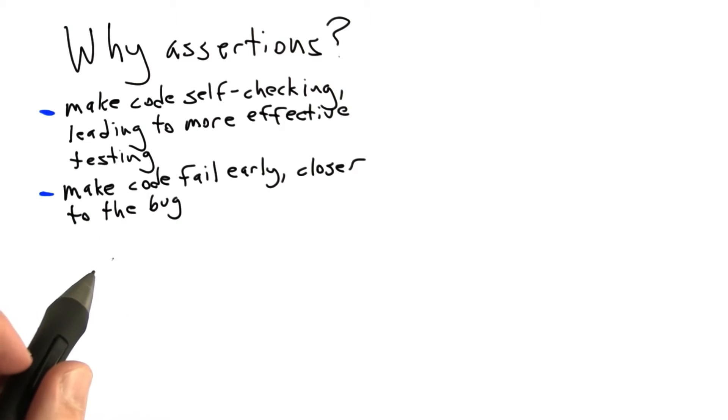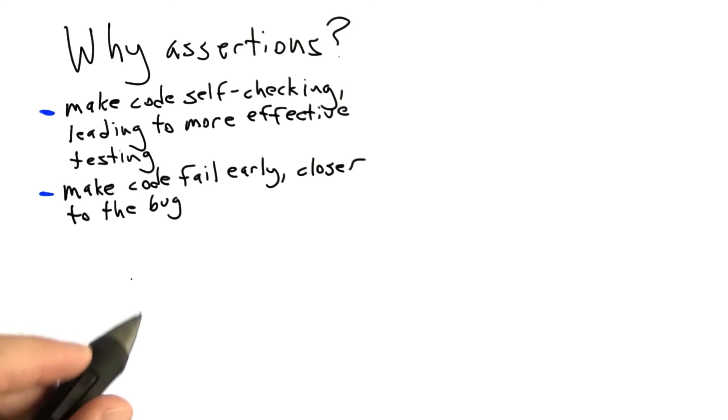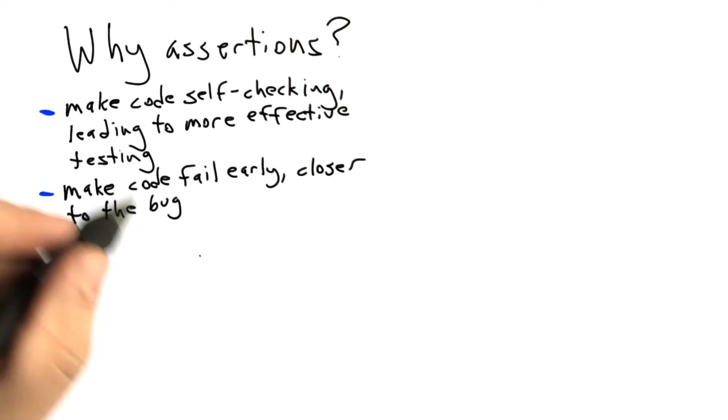Second, assertions make code fail early at a location that is closer to the actual bug. And so this is more relevant to debugging than to testing, but it's generally the case that debugging is a difficult backwards problem where you're reasoning in a backwards sort of way about the behavior of the software that you wrote. And the less steps there are in one of these backwards chains, the better. And assertions really can help with that.